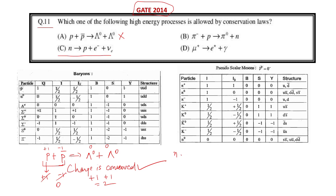Moving on to reaction C: neutron going to proton, electron, and electron neutrino. Charge is conserved. Baryon number is also conserved because neutron has baryon number one and proton has baryon number one. Now we will check lepton number — on the left-hand side it is zero.